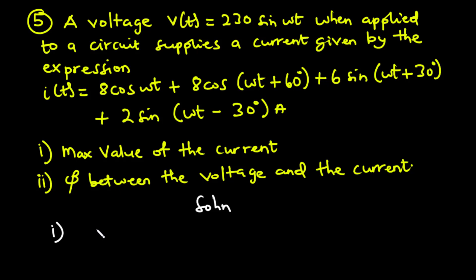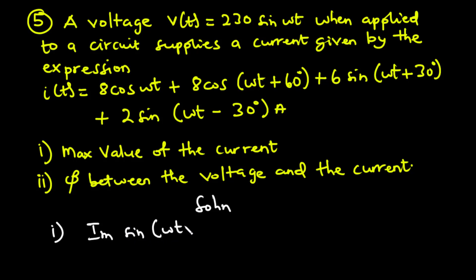To find the maximum value of the current, we need to sum up the various current components. We notice that the first two terms use cosine while the last two terms use sine. We need to represent all the current components in the standard sinusoidal form I_m sin(ωt + φ).